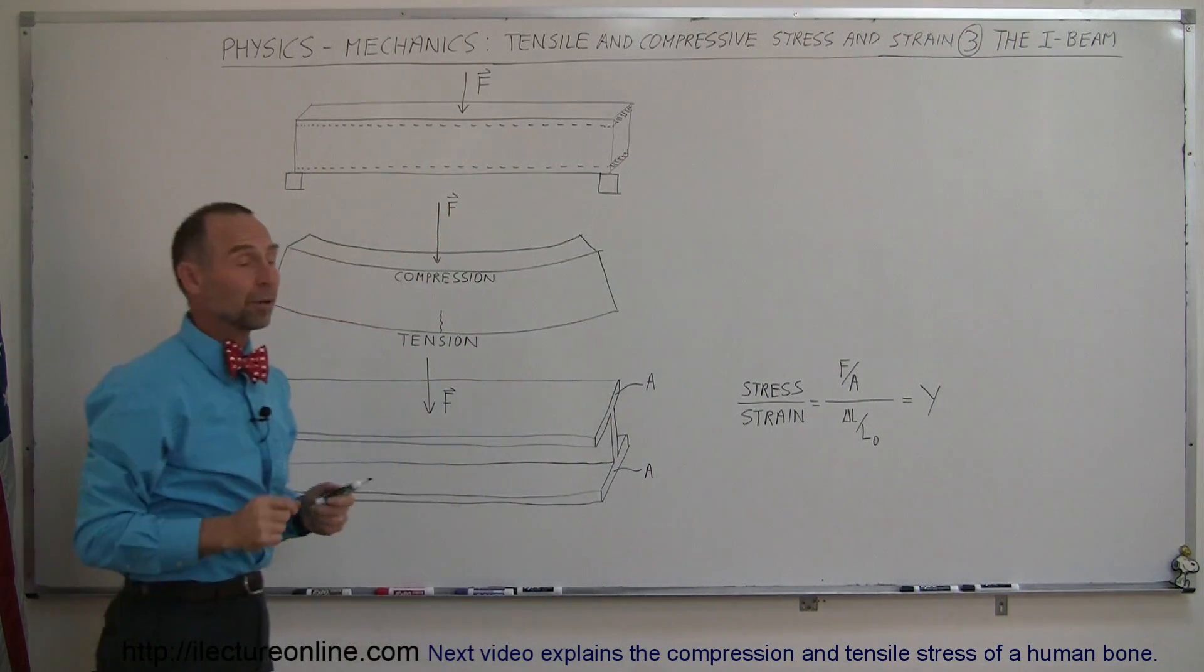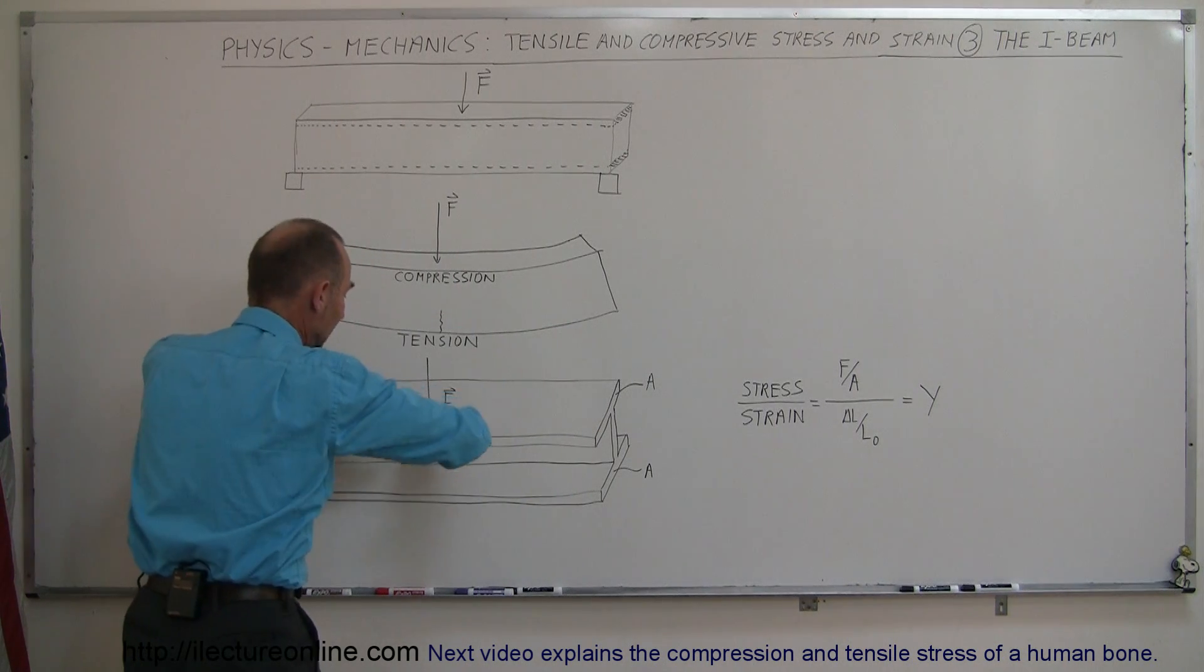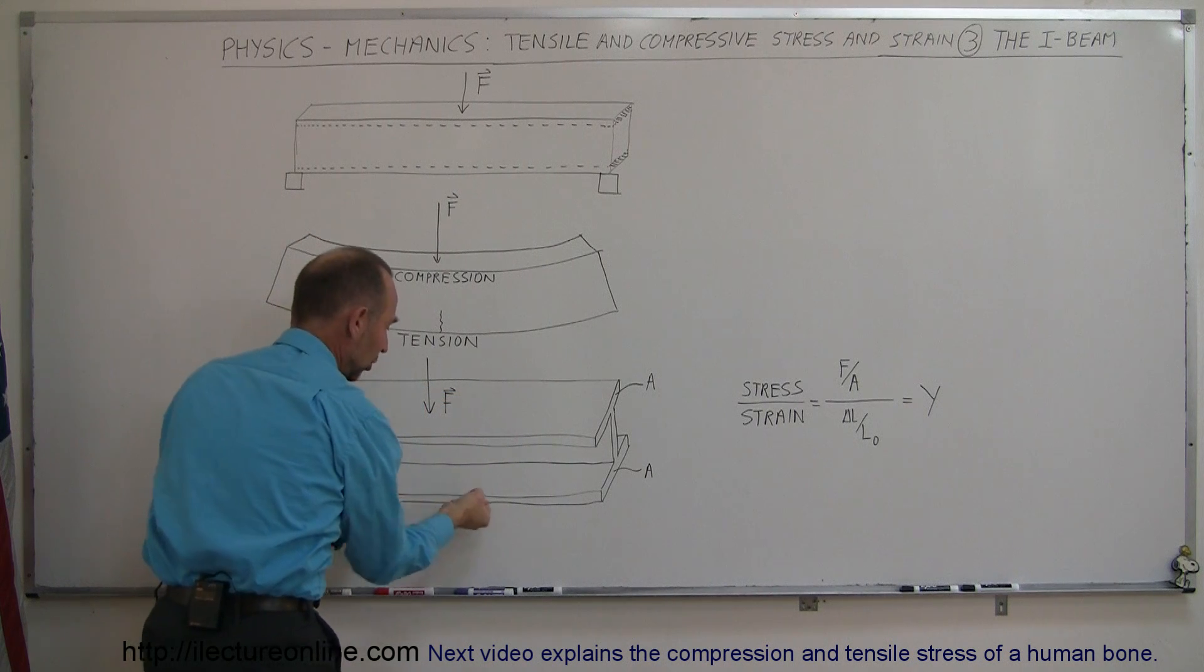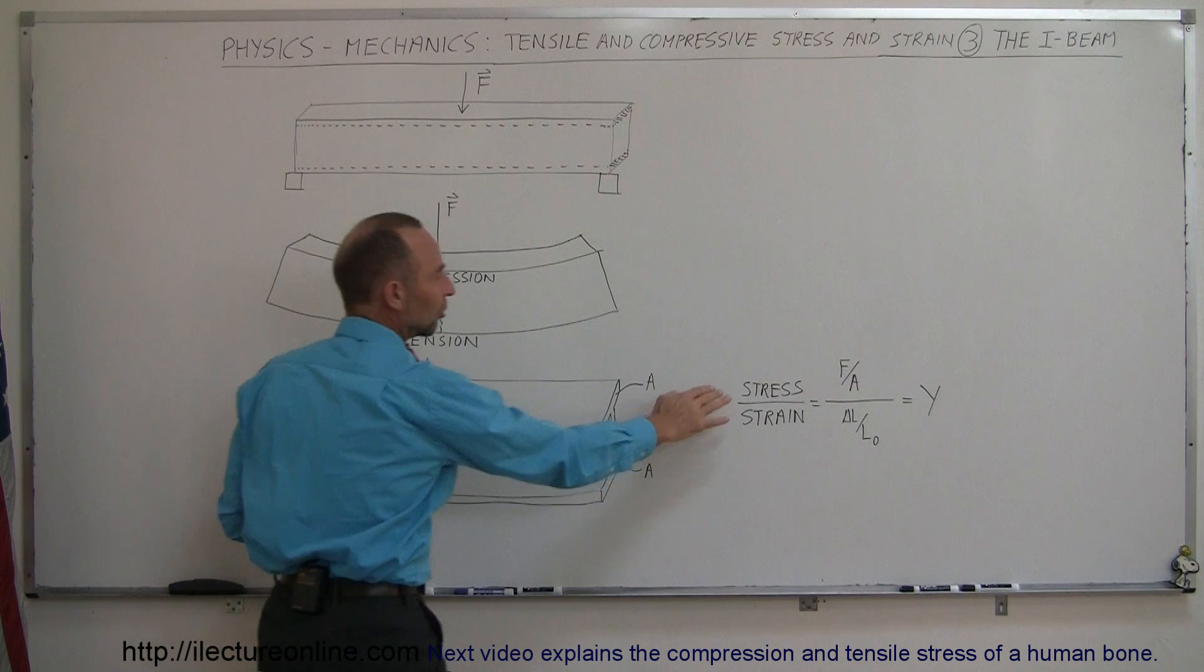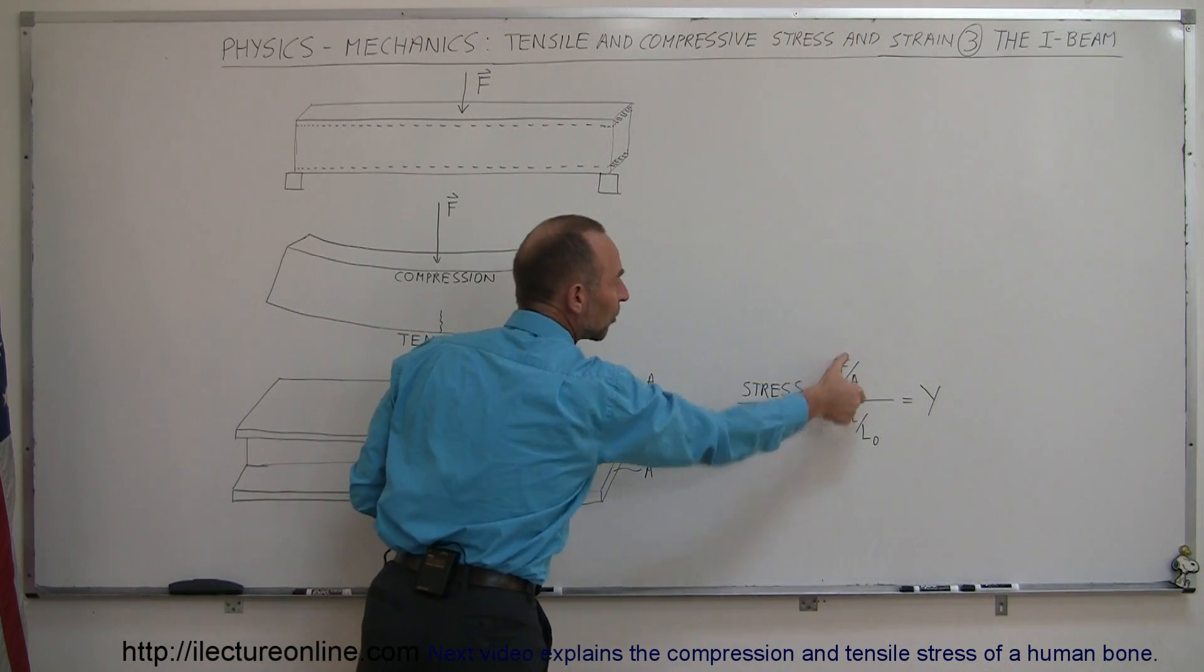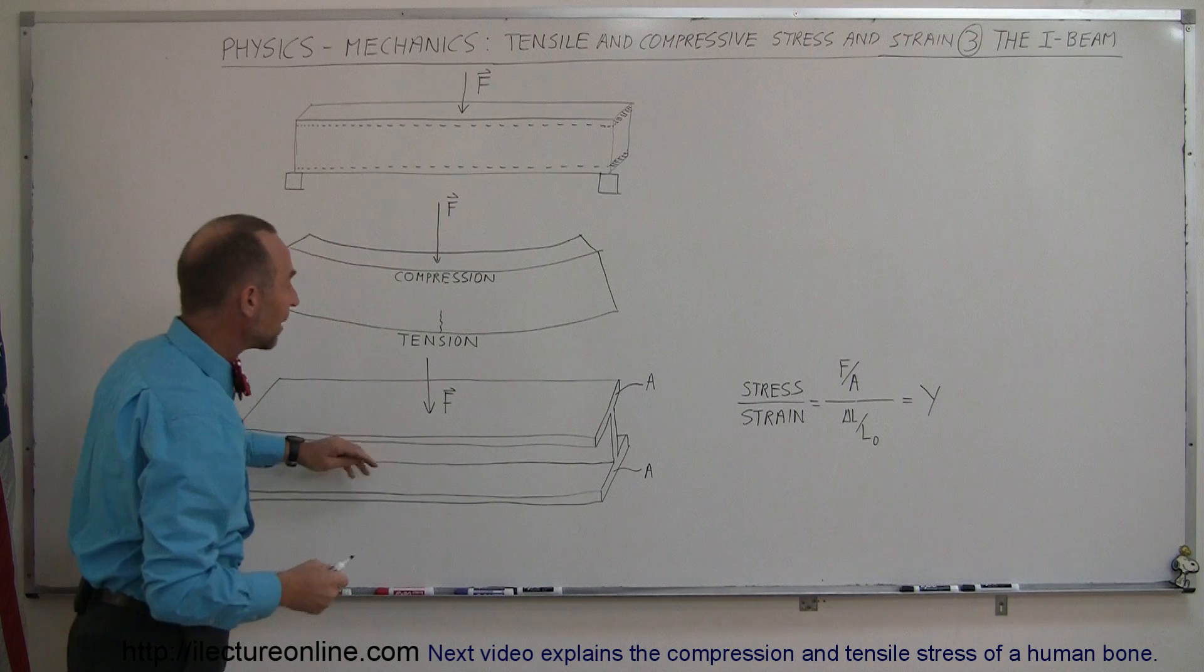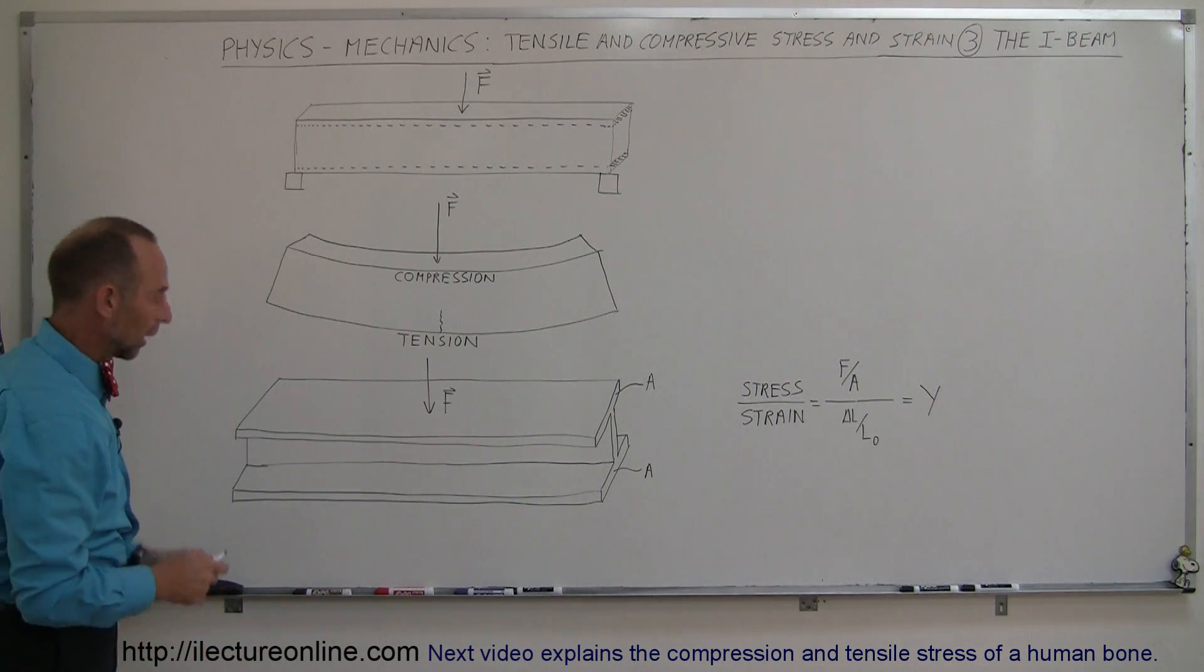At the bottom of the beam, those molecules are going to be under tension and pulled apart. But again, since there's a much larger cross-sectional area, the stress will be reduced because the A is much bigger. So we have much smaller stress on an I-beam compared to a typical beam built like a normal beam.